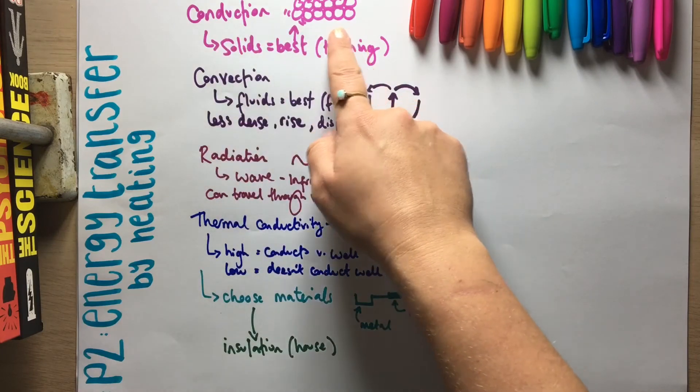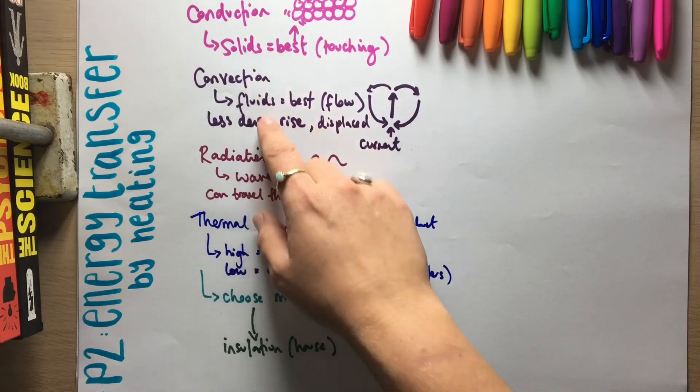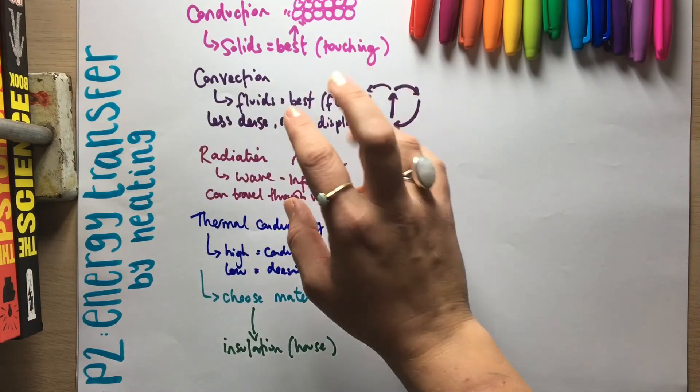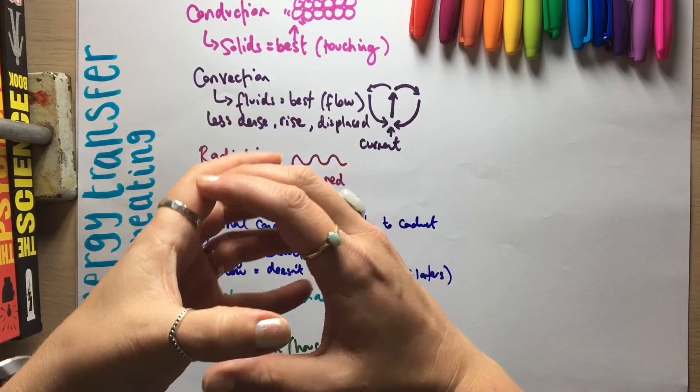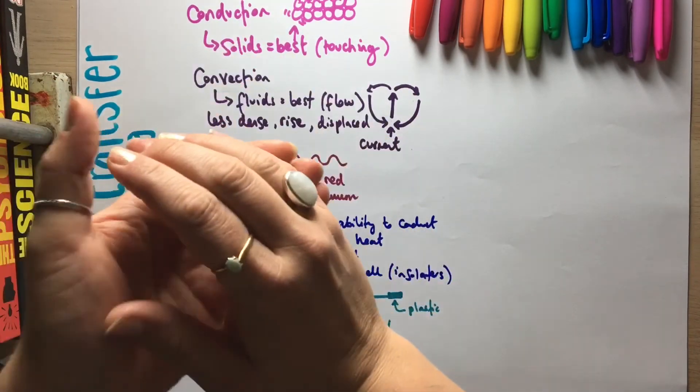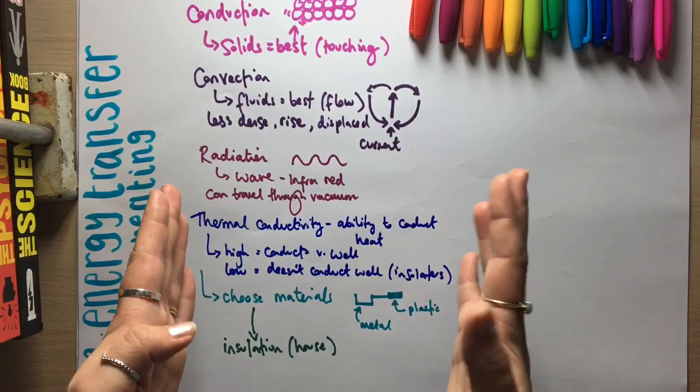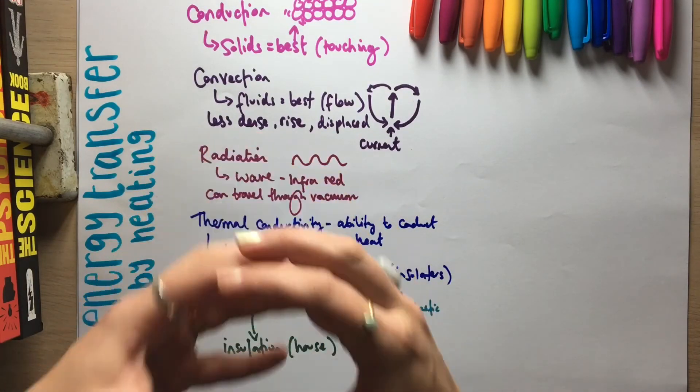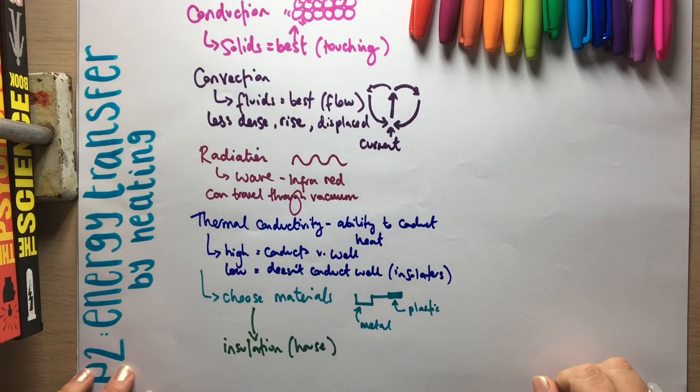And so therefore, it's going to reduce conduction because gases don't conduct very well, if at all. And then by trapping the air, you're reducing convection because rather than the air then being able to move up and out, you're stopping it and you're saying that it has to stay in one space.